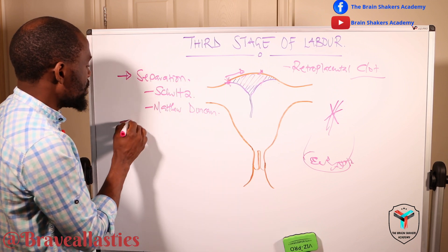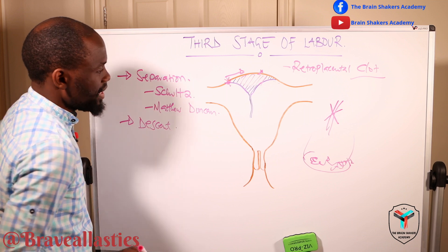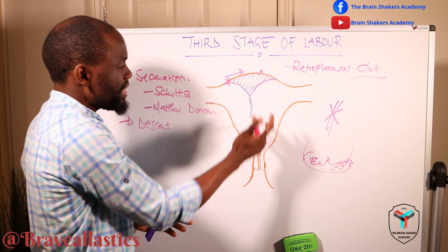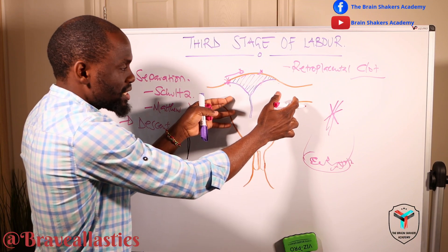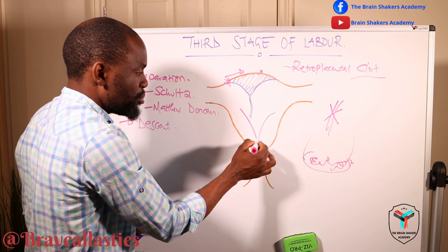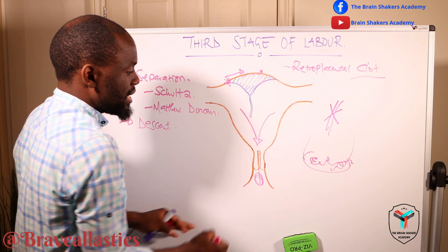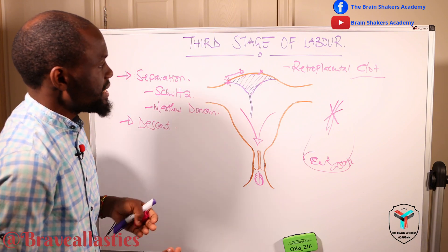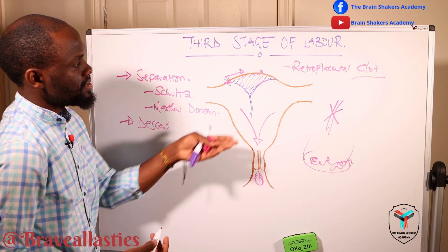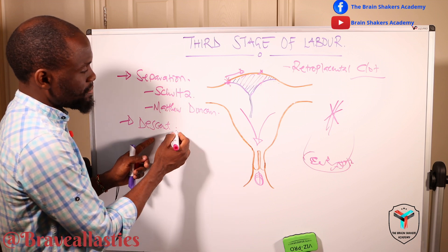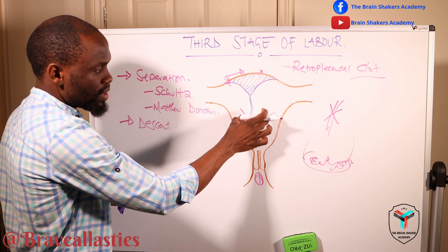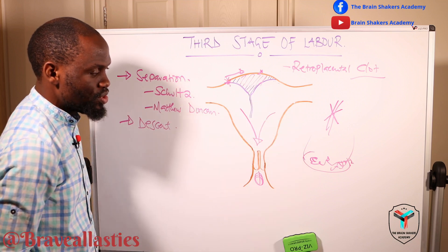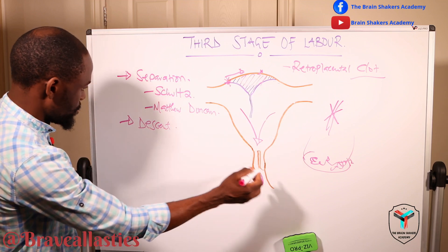From separation, you will obviously have descent. Descent is just like the fetal head coming down — after its separation, with the continuation of uterine action, the placenta is pushed down into the vagina, and as it comes through the vagina it is able to be delivered. The descent aspect is simply the downward movement of the placenta from its site of implantation down into the vagina and closer to the vulva.